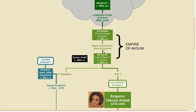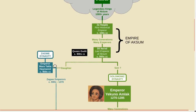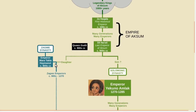The last emperor of Aksum was Dil Na'od. According to oral tradition, he was supposedly defeated by an evil queen named Gudit who had all the male members of the royal family killed. She was then followed by the Zagwe dynasty, which went on to rule Ethiopia for about 300 years.